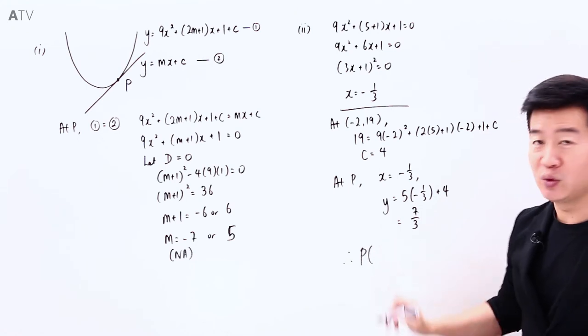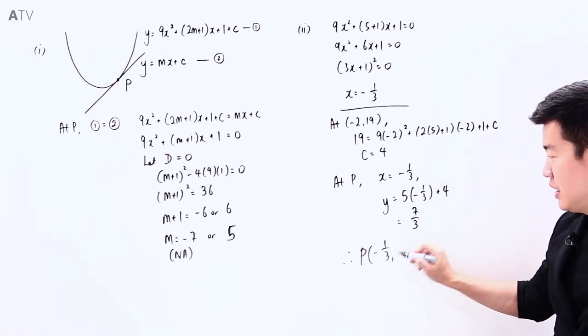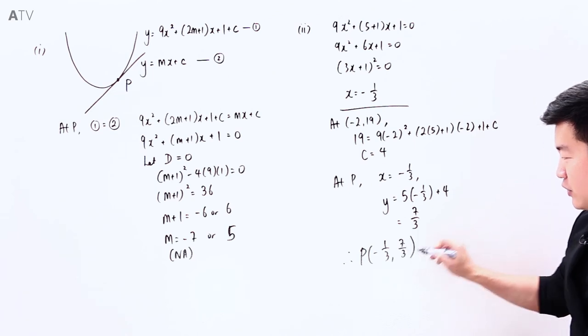Therefore, we now know the coordinates of P, and that is (-1/3, 7/3).